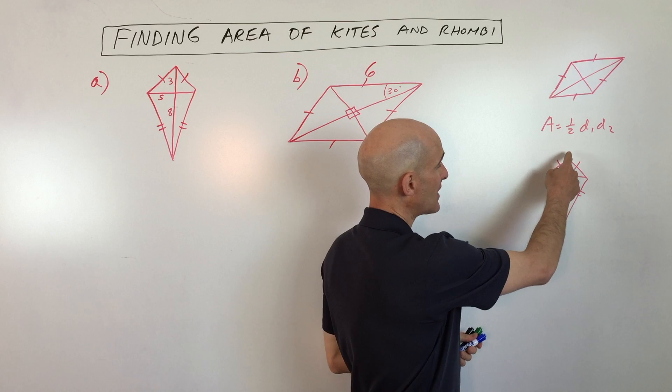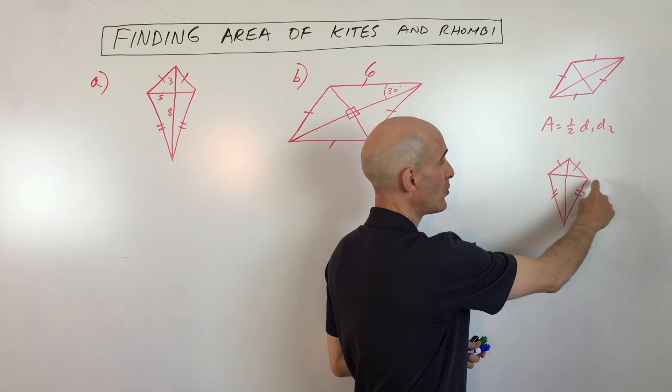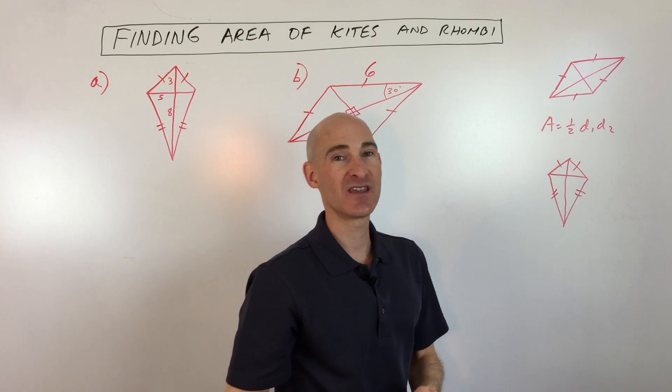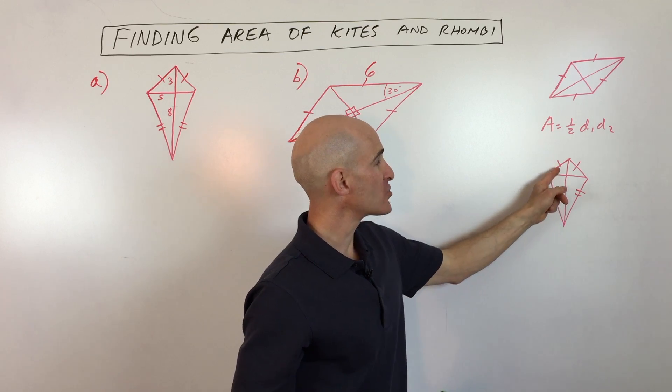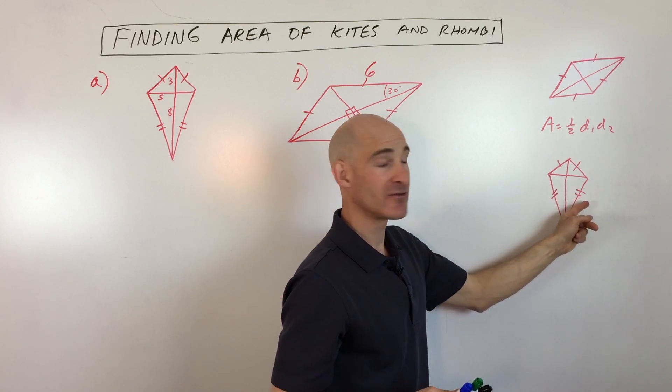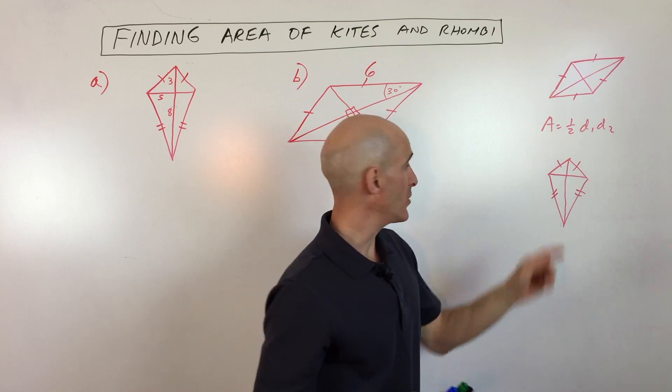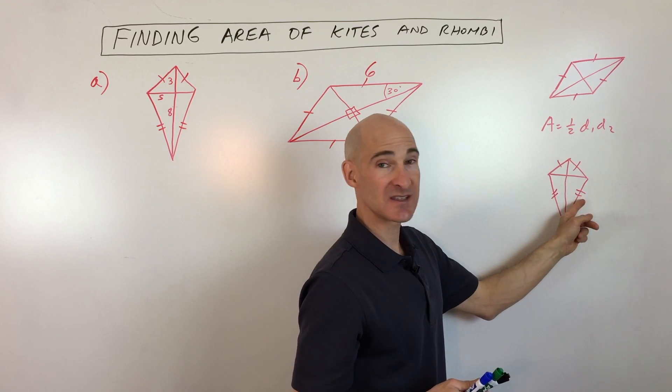It's nice, you just have to take this whole length times this whole length times one half and that gives you the area. Now just a quick refresher on kites: they have two consecutive pairs of sides that are congruent. You can see that these sides are congruent and these sides are congruent, but these are not congruent.